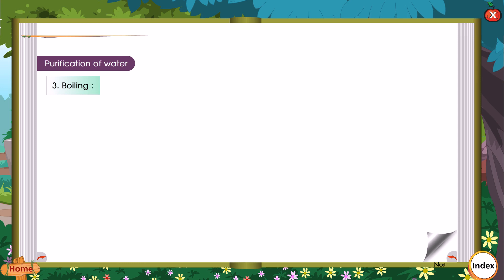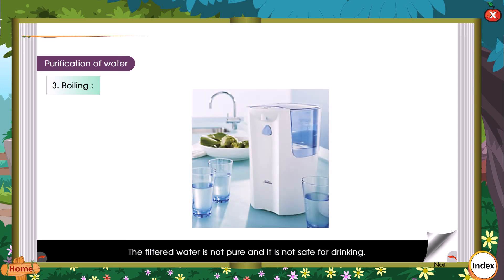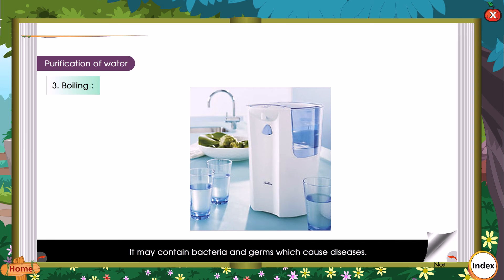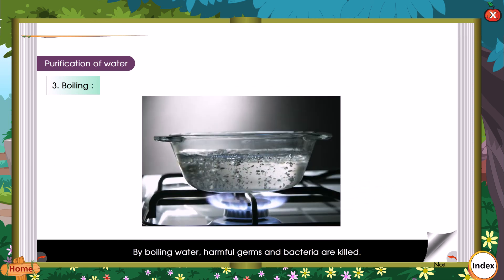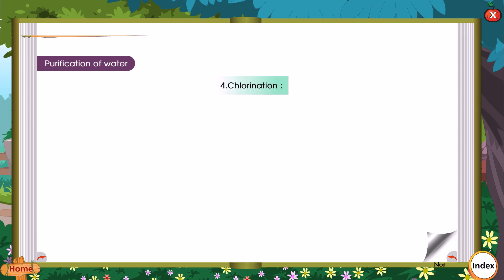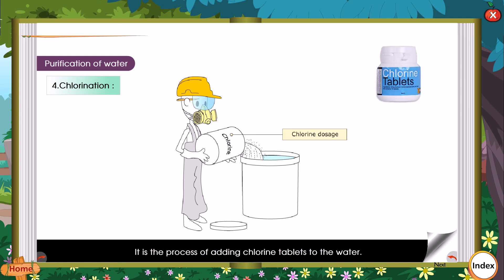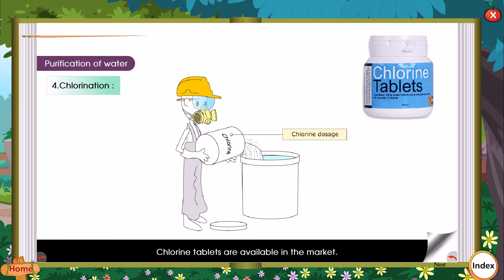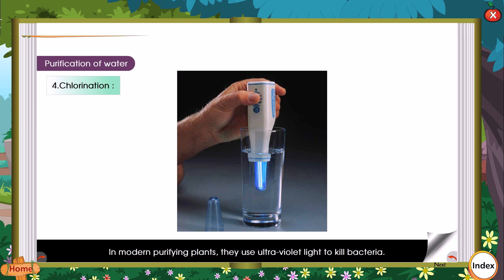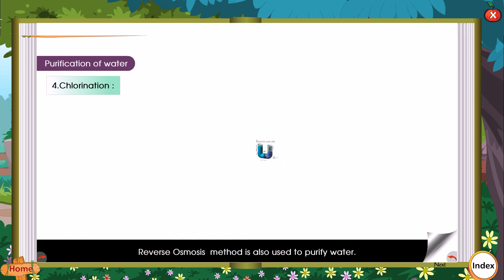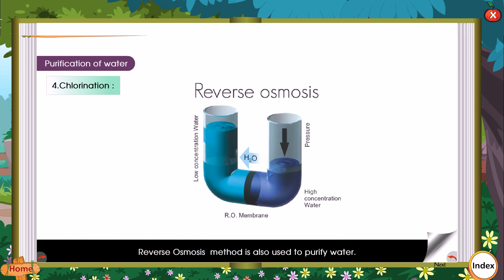Boiling: The filtered water is not fully pure and is not safe for drinking, as it may contain bacteria and germs which cause diseases. By boiling water, harmful germs and bacteria are killed. Chlorination: Chlorination is the process of adding chlorine tablets to the water to kill germs and bacteria. Chlorine tablets are available in the market. In modern purifying plants, they use ultraviolet light to kill bacteria. Reverse osmosis method is also used to purify water.